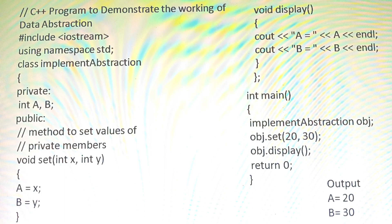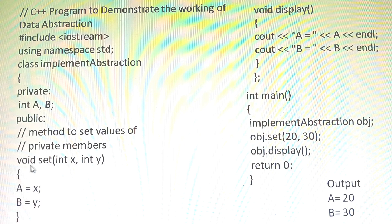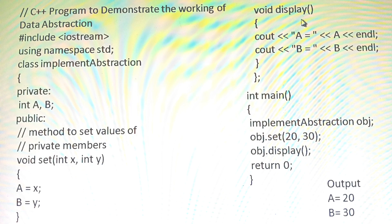Let us do one program to demonstrate the working of data abstraction - how we can implement data abstraction through classes. The class name is ImplementAbstraction. Here we have taken two variables A and B with private access. Then in the public section, we have two functions: set function and display function. The set function initializes the value for A and B. It takes arguments int x and int y, assigning x to A and y to B. In the main program with the object, we will pass the values for x and y.